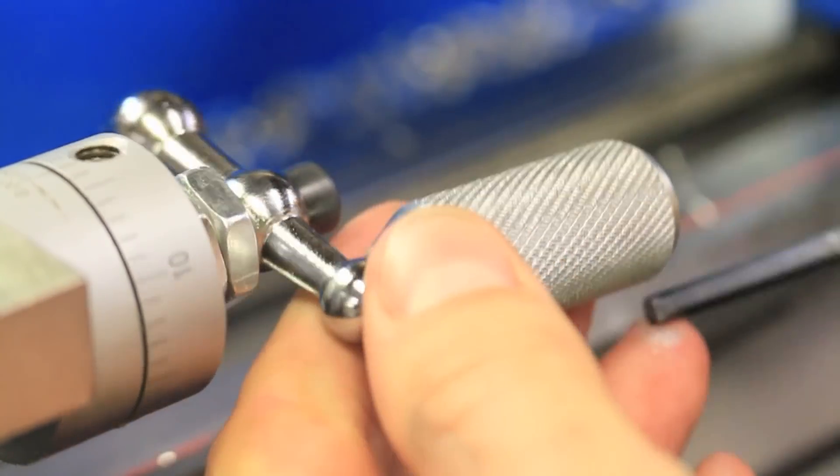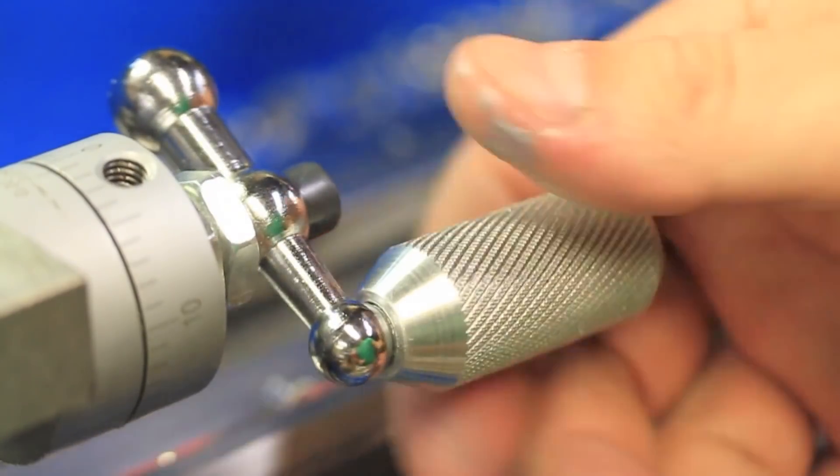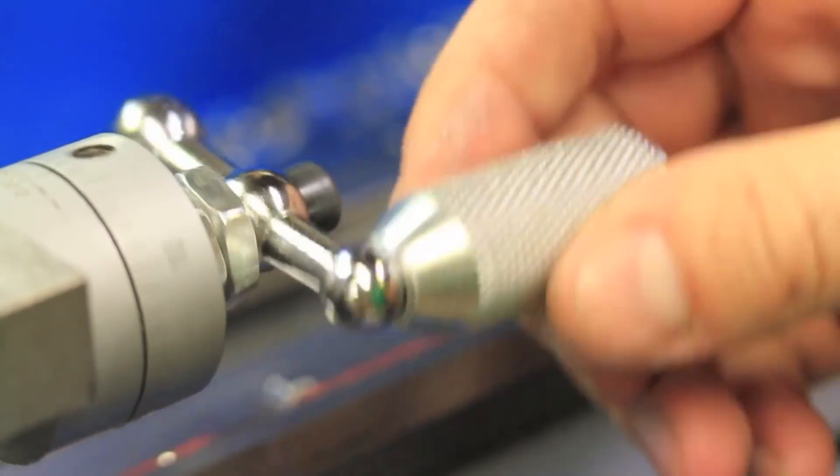This will prevent the cap screw from unscrewing at any point and allow you to have more control while turning it by being able to firmly hold on to the handle.